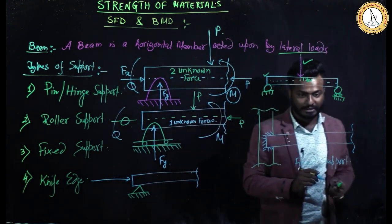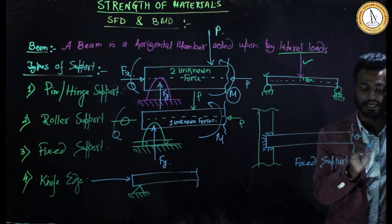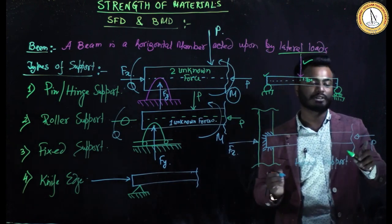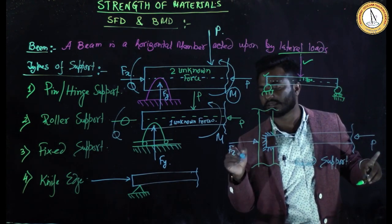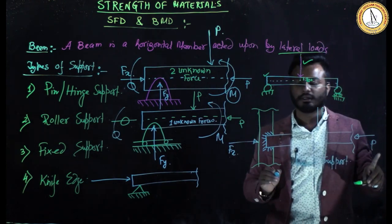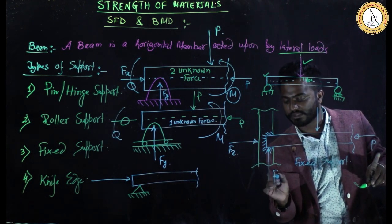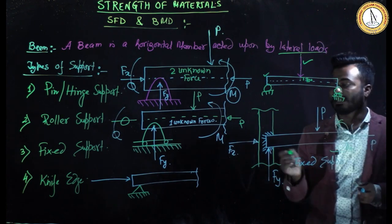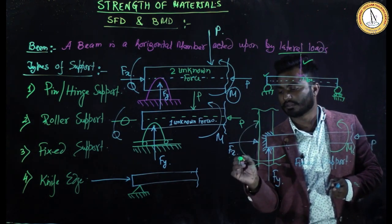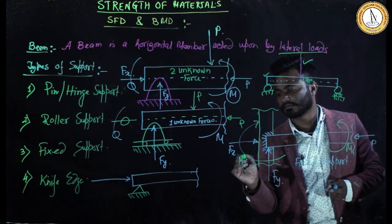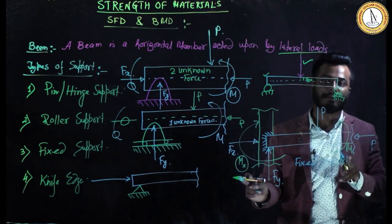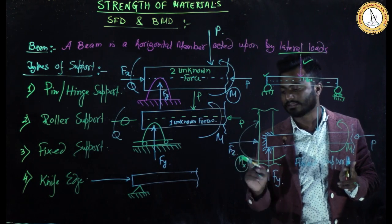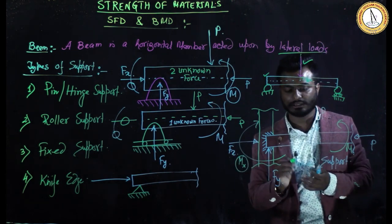For fixed support: if a horizontal force P is applied, the support gives resistance Fx (unknown). If a vertical force is applied, the resistance Fy is also unknown. If a known moment M is applied, the support gives an unknown moment reaction Mx. So fixed support has three unknown forces: Fx, Fy, and Mx.